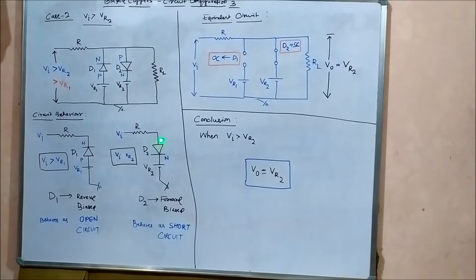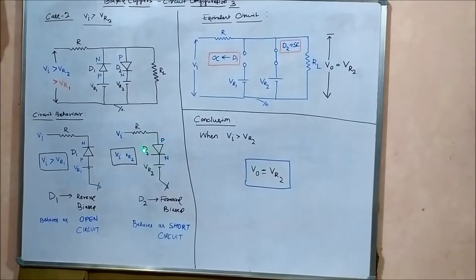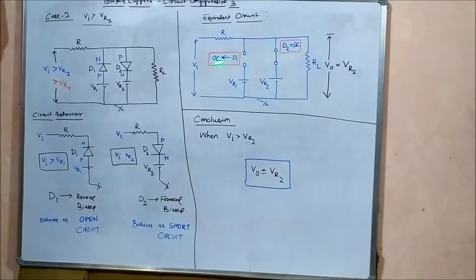For diode D2: the P-end is connected to Vi and the N-end to Vr2. Since the input voltage is greater than Vr2, the P-end is connected to a higher electric potential and the N-end to a lower electric potential. So D2 is forward biased and behaves as a short circuit.